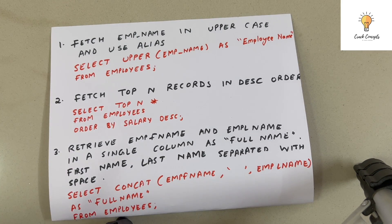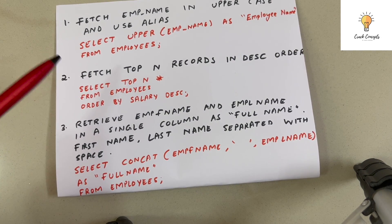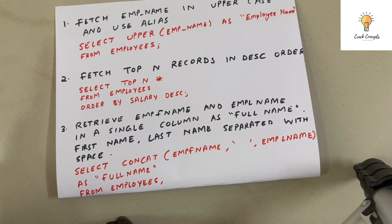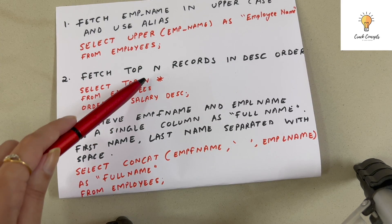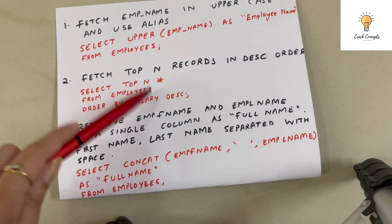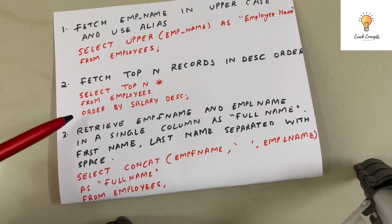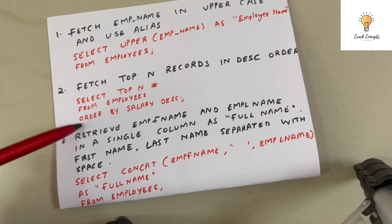FROM employees. Now the second query: fetch top N records in descending order. Whenever we want the top N records — top three, top five — we use SELECT TOP N. N means any number, so it could be two, three, four, five. For example: SELECT TOP 5 * FROM employees ORDER BY...